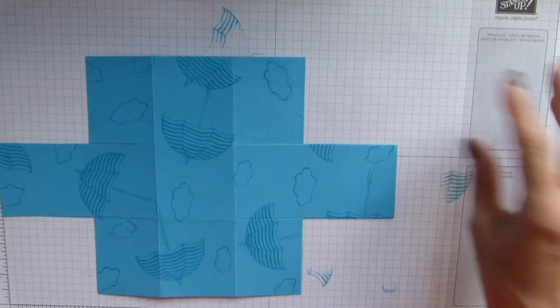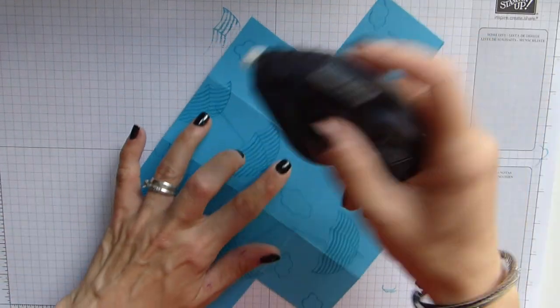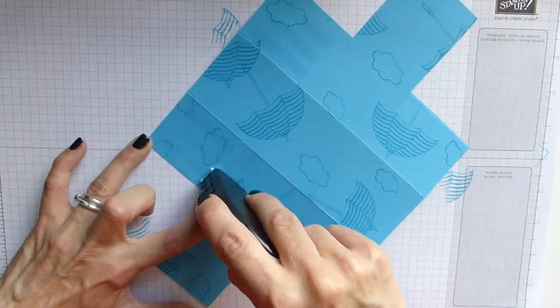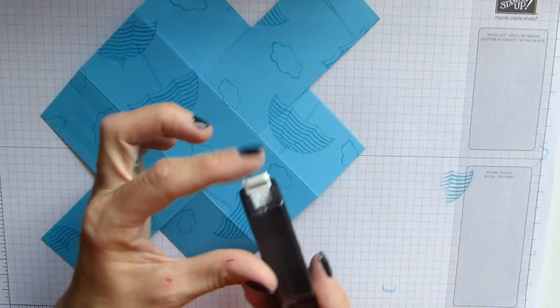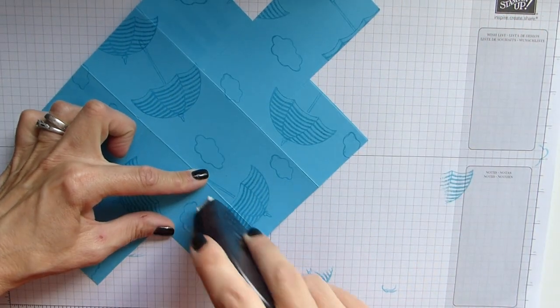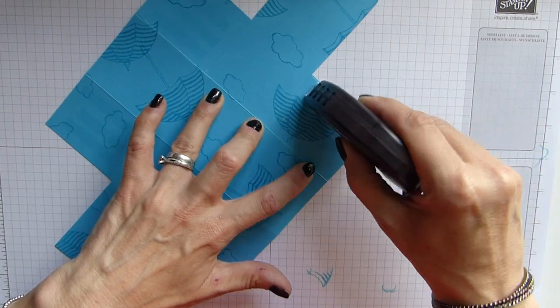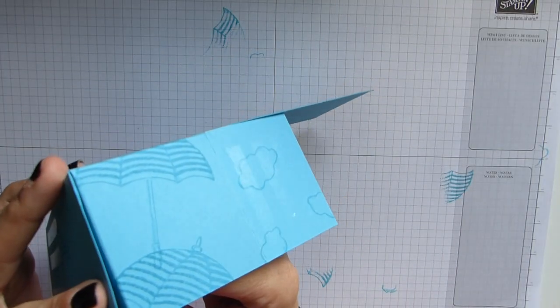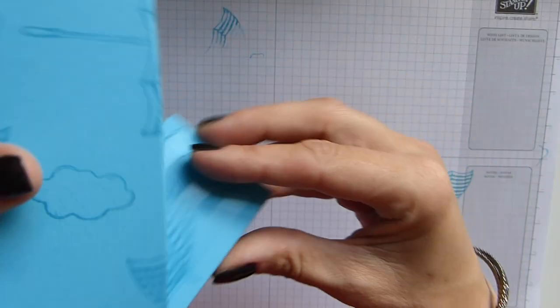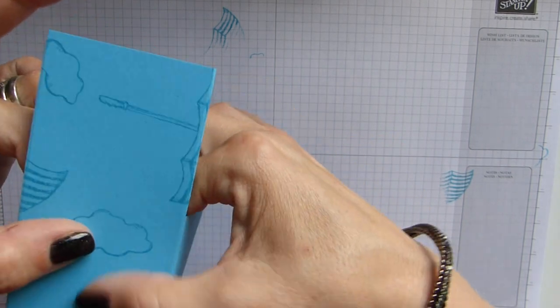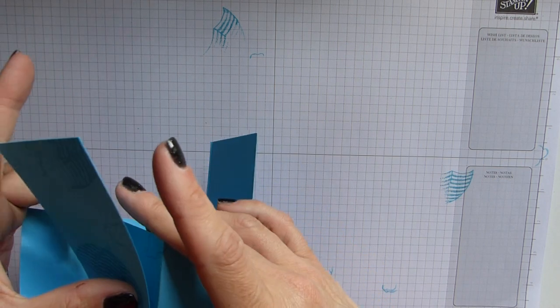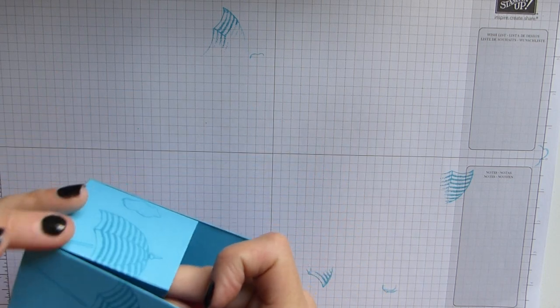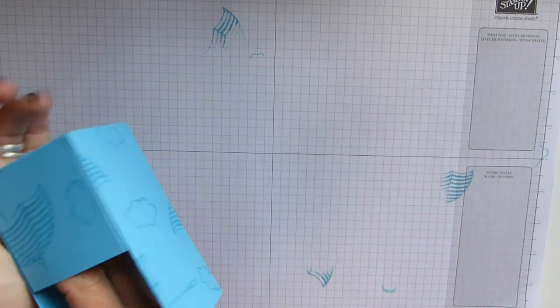There's our basics. Very simple. Glue on all the tabs - one, two, three, one, two, three. Then we just simply fold them up into place.